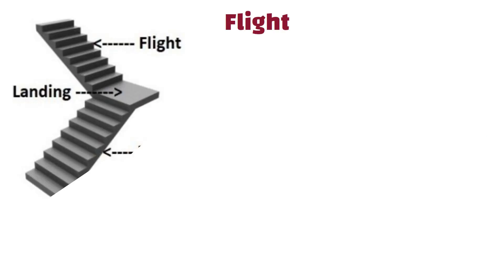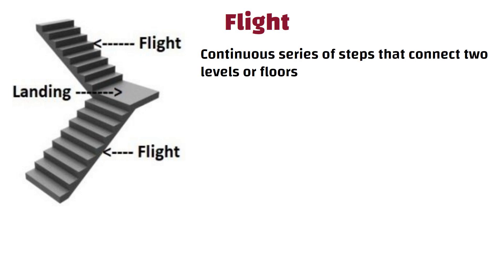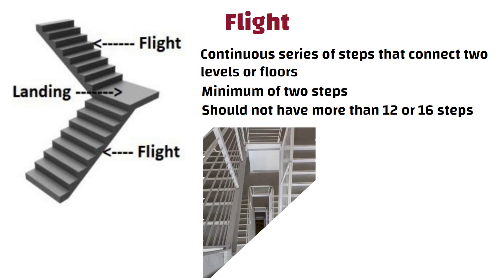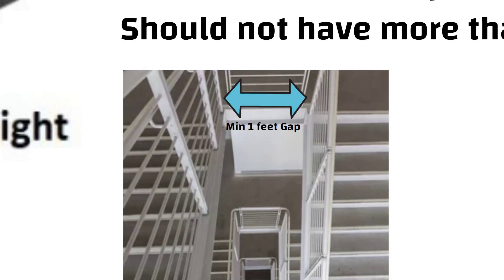8. Flight. A flight in a staircase refers to a continuous series of steps that connect two levels or floors. Most building codes specify a minimum of two steps in a flight of staircase. Some building codes may stipulate that a flight of stairs should not have more than 12 or 16 steps before requiring a landing. A minimum gap of one feet should be kept between two flights.